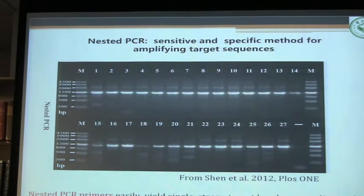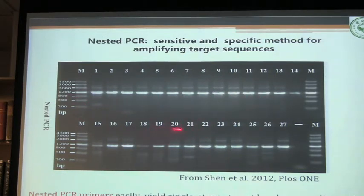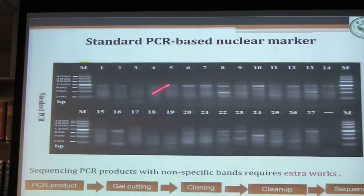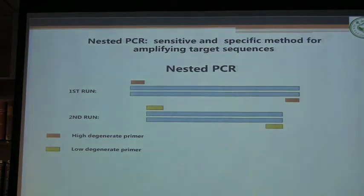Here I show you another picture using the same primer — but the PCR bands are very strong now. How can this happen? Because I'm using a very common technique called nested PCR. This is an overview of nested PCR. You use common primers to amplify the target from total DNA and you always get a smear band. This happens because within a cell you only have two copies of that target region.